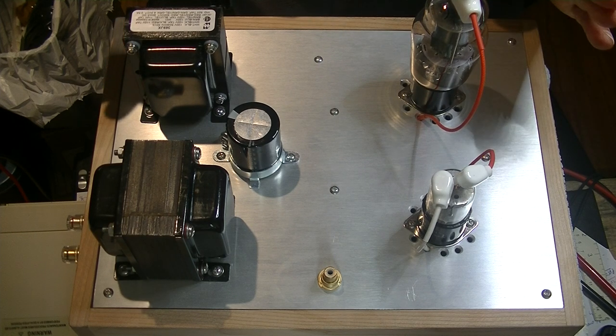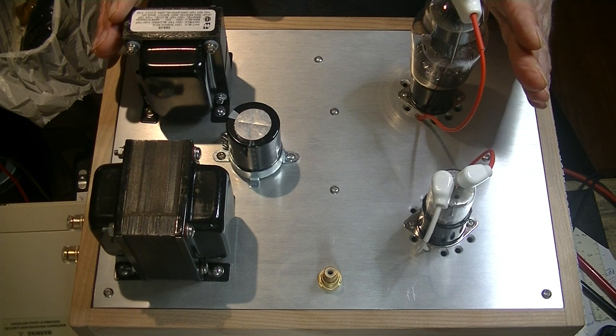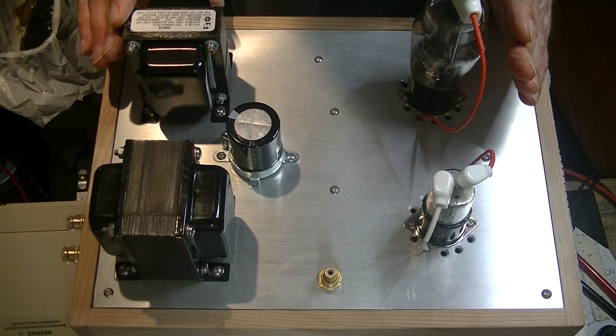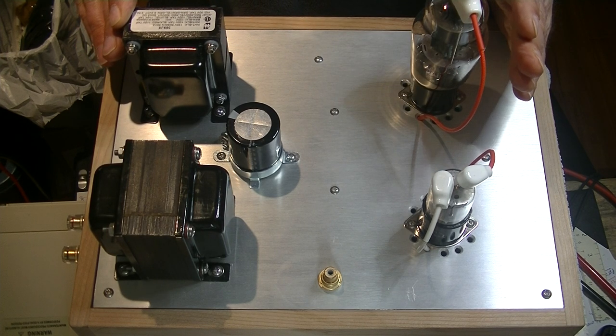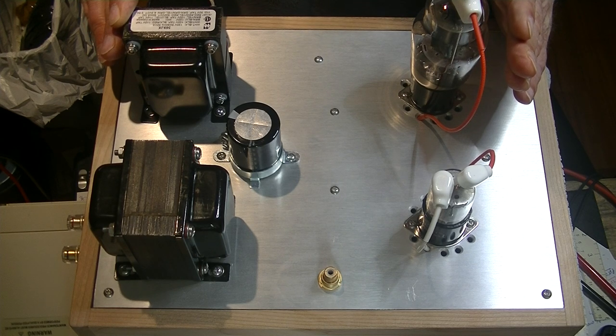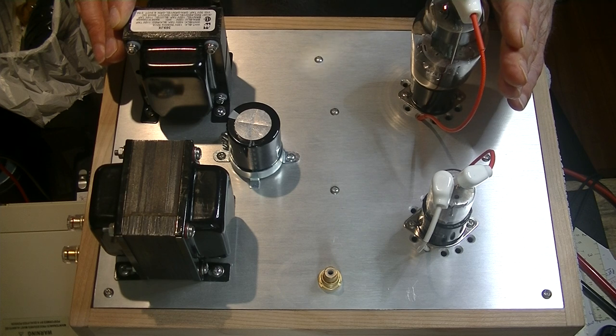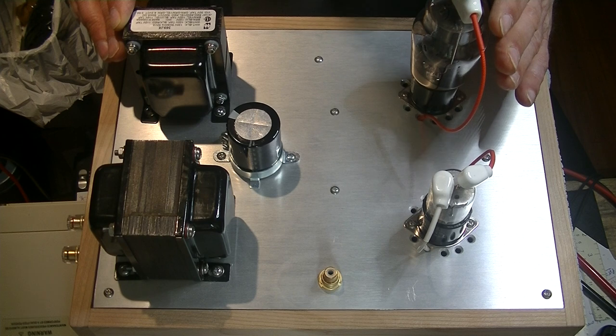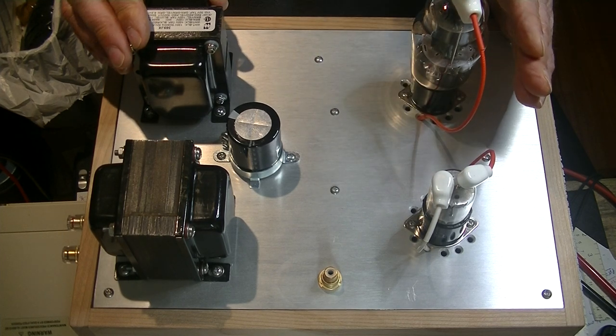Let's just look at a pure class A mono block. A mono block is just a single channel power amplifier. For stereo, you need a matched pair of them. And if we have two channels inside one box, it's called a stereo amplifier. And if we include the preamp as well, we call the whole shebang an integrated amp. Everybody got that? There will be a quiz at the end.